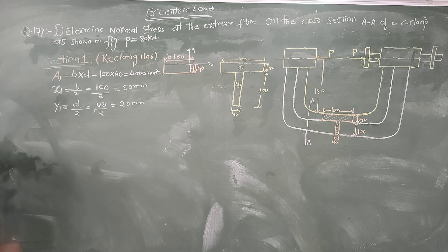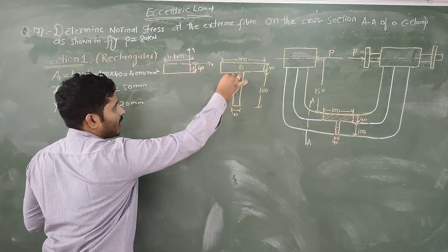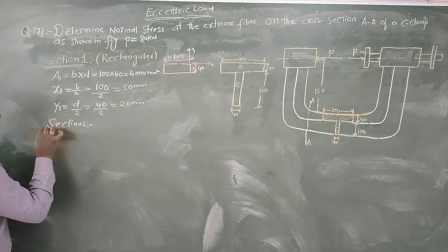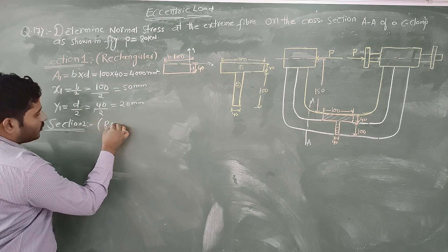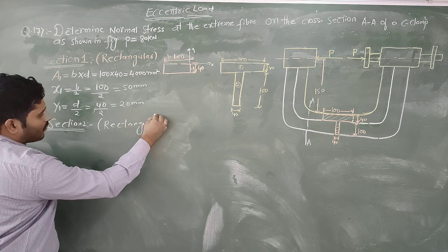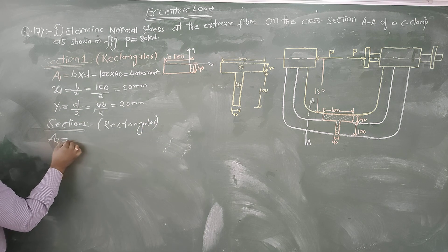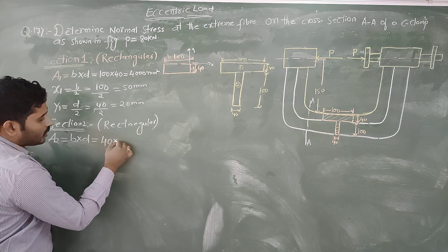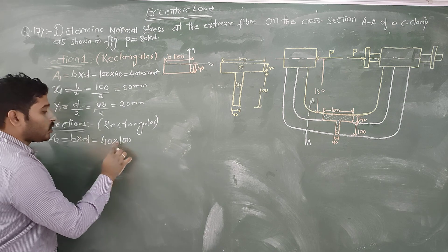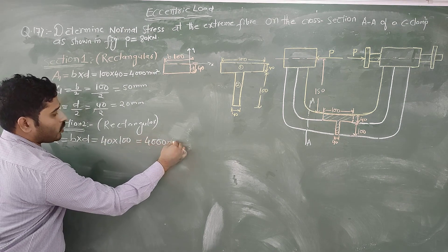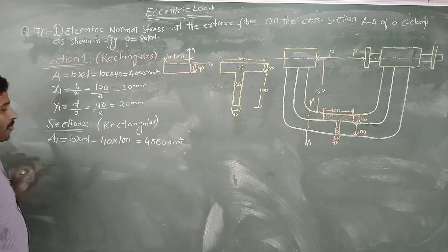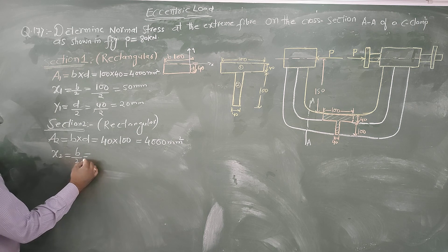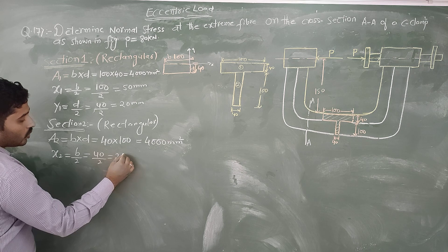Now we solve Section 2. Section 2 is also a rectangular cross-section. Area A2 = Breadth × Depth = 40 × 100 = 4000 mm². We also need x2, which is 20 mm.